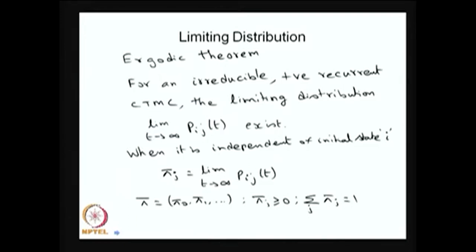Suppose the limiting distribution is independent of initial state — it need not be, but suppose it is. Then I can write the limiting probability as pᵢⱼ(t), and since it is independent of i, I can write it as πⱼ. I can then form a vector, and since it is a limiting distribution it is a probability distribution: the probabilities are greater than or equal to 0, and the summation of probabilities equals 1 — it will not be defective. That is what the Ergodic theorem states: whenever you have an irreducible CTMC with all states positive recurrent, as t tends to infinity the system has a limiting distribution, and this satisfies the probability mass function conditions.